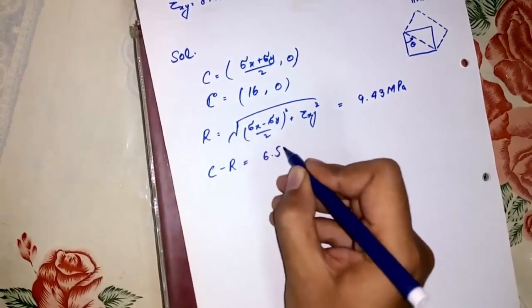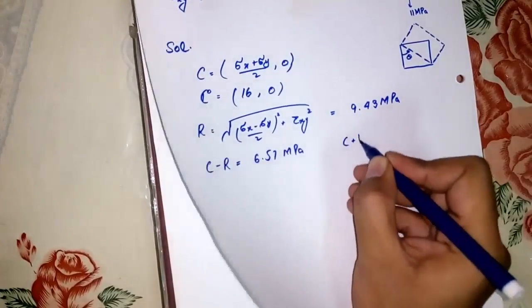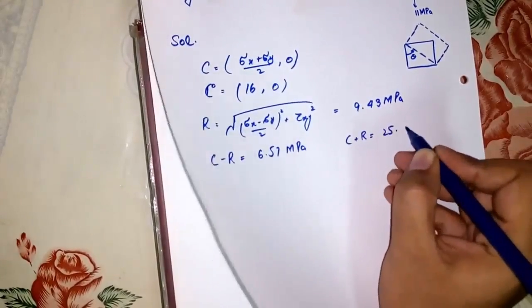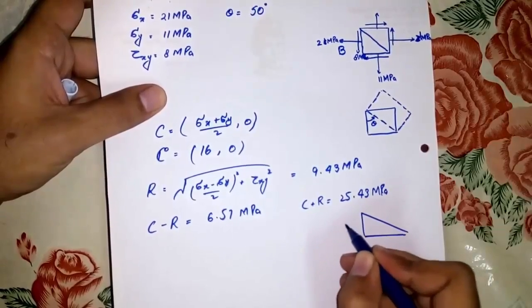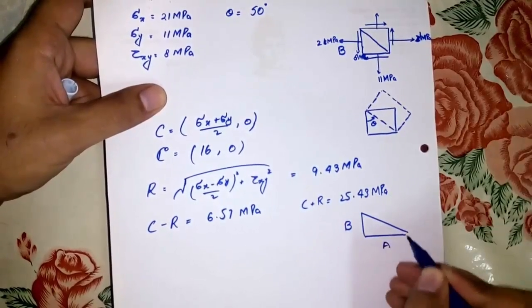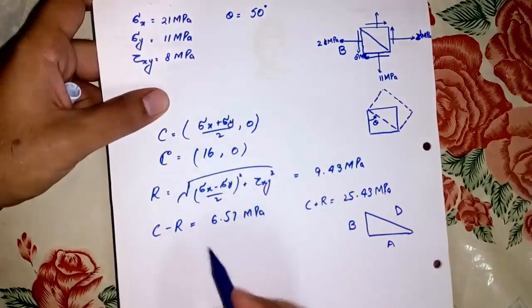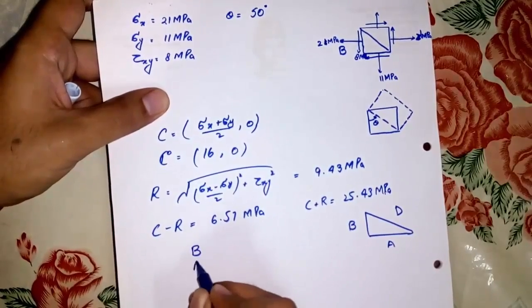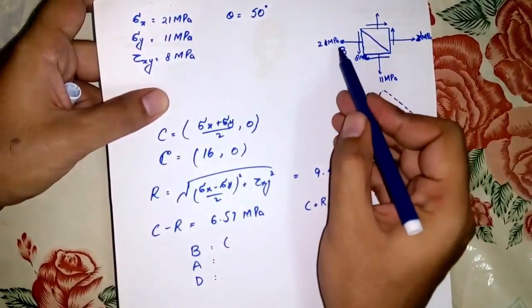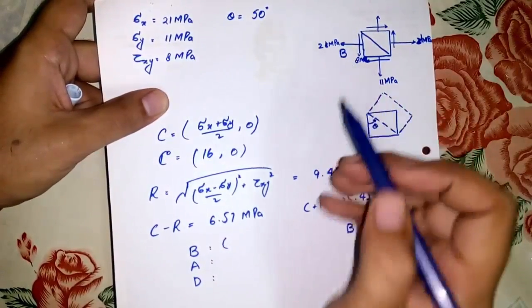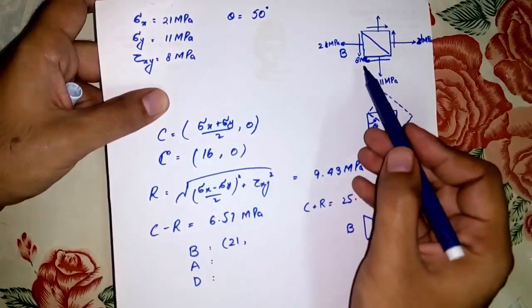Now we have to find the range. Center minus radius is 6.57 megapascals, and center plus radius is 25.43. I am drawing a wedge here — this is the B face, this is A, and this is D. The force on the B face is outward, which shows it is tension, so 21 megapascals, and the shear force on that face is negative.